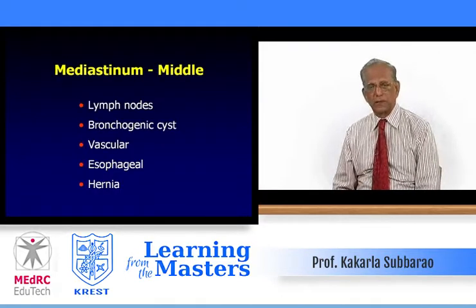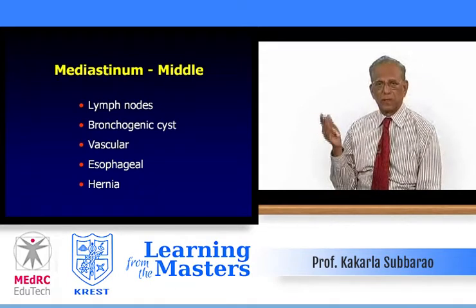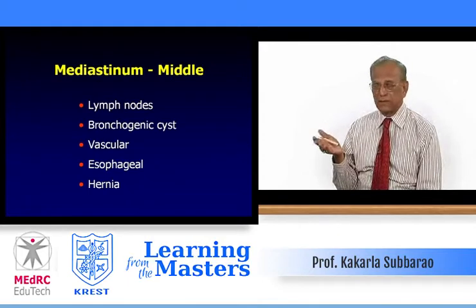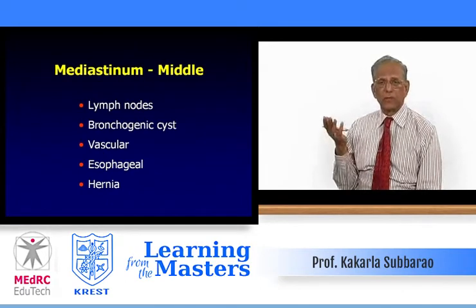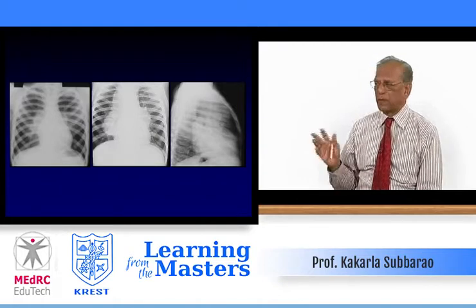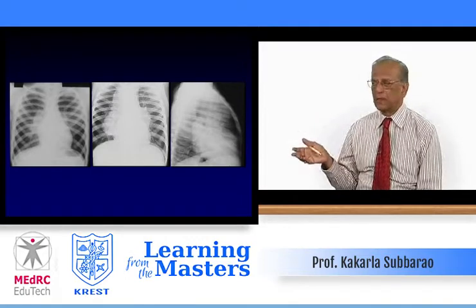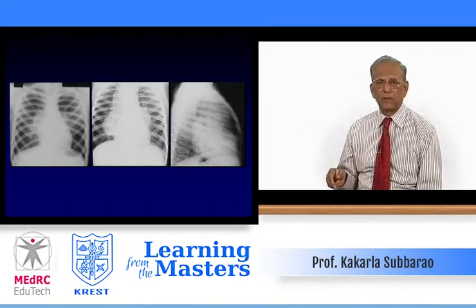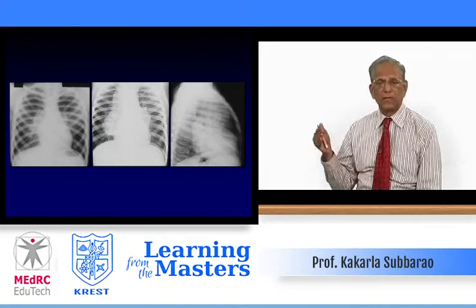Now we come to the middle mediastinum. Common structures here include lymph nodes, perihilar nodes, bronchogenic cysts, vascular structures, the pulmonary artery, part of the aorta, the esophagus, and hiatal herniations through the esophageal hiatus. Right paratracheal nodes on the left film, and then right paratracheal and both hilar nodes — this proved to be tuberculosis. In our country in childhood, we think of tuberculosis first, and then only lymphoma and other conditions.